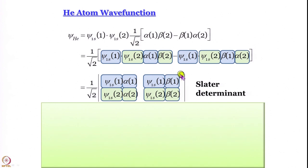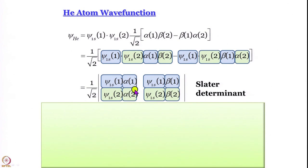Upon going from top to bottom, what happens? Looking at the first column: psi_1s_1_alpha_1 and psi_1s_2_alpha_2. So psi_1s_alpha - that is your spin orbital - has remained the same when you go from top to bottom; what has changed is the electron label, from 1 to 2, and the same pattern holds throughout.